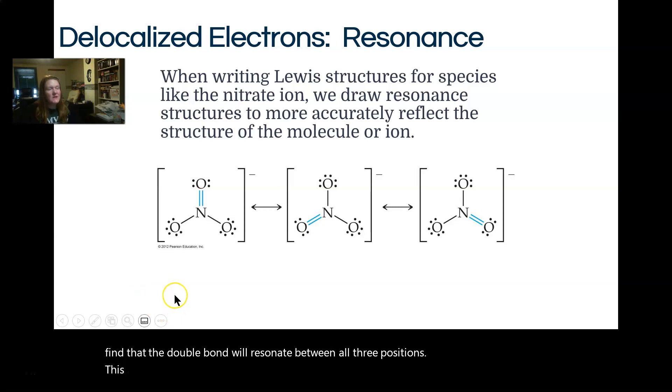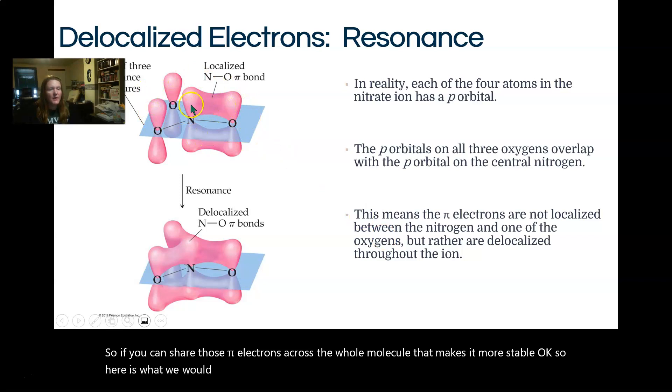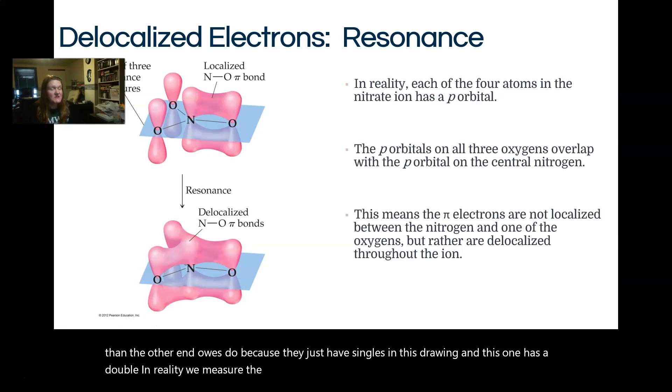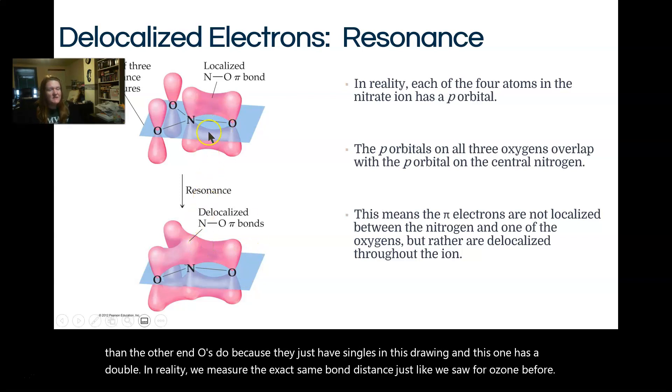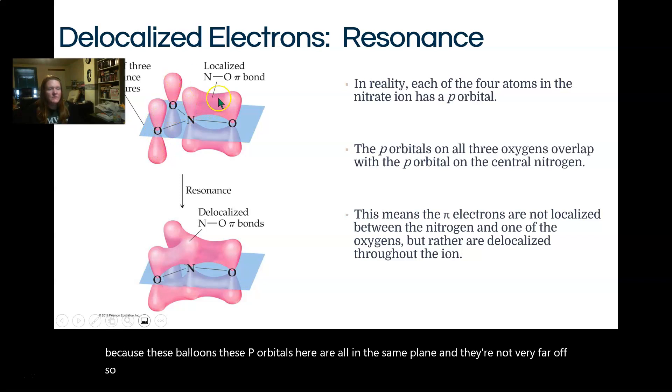If you took multiple pictures, you will find the double bond will resonate between all three positions. This makes things particularly stable. Resonance is a good thing. It's kind of like if I could share my bills with two other families, that would be great. So electrons are a burden, and they're repelling each other. If you can share those pi electrons across the whole molecule, that makes it more stable. So here is what we would call a localized pi orbital just between the 1N and 1O. This is not an accurate depiction of what we measure because this would have a shorter bond than the other NOs because they just have singles, and this one has a double. In reality, we measure the exact same bond distance just like we saw for ozone before, which means that these pi electrons must bounce from one to the other.